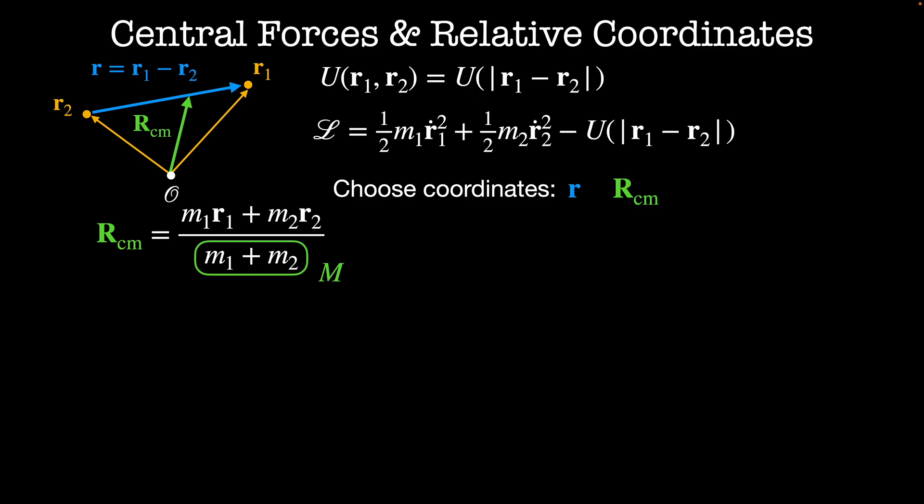We'd like to rewrite the Lagrangian in terms of these new coordinates. The potential energy is already a function of these coordinates as it depends only on the magnitude of the relative positions r. To find the kinetic energy, we can rewrite our positions r1 and r2 in terms of our new coordinates r and Rcm. r1 equals Rcm plus m2 divided by the total mass times the relative position r.